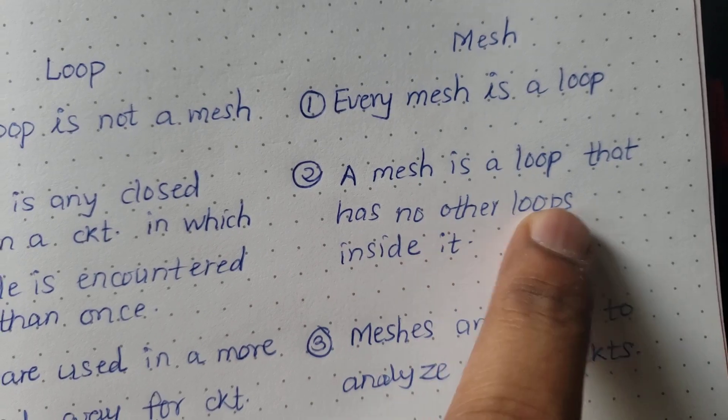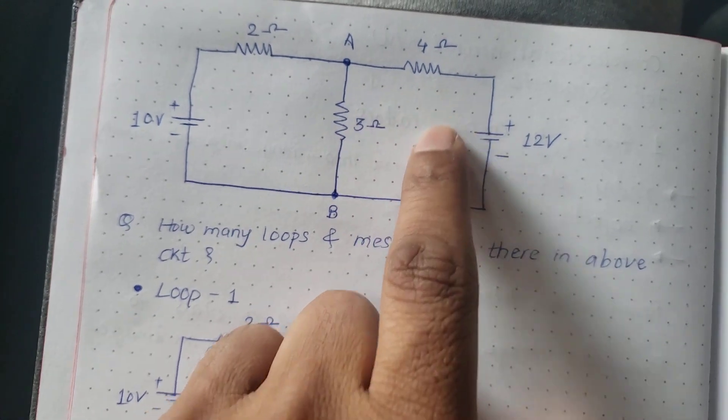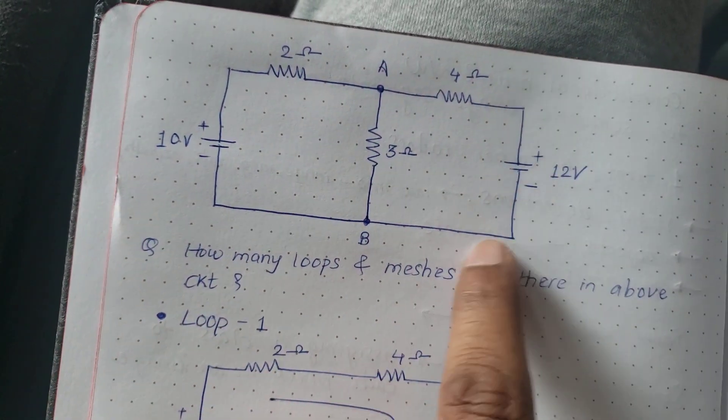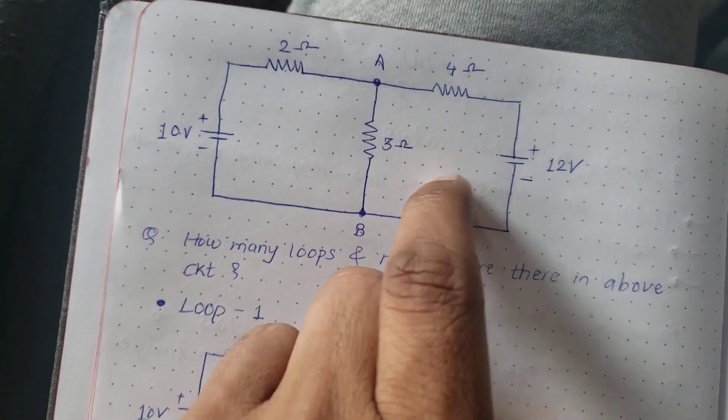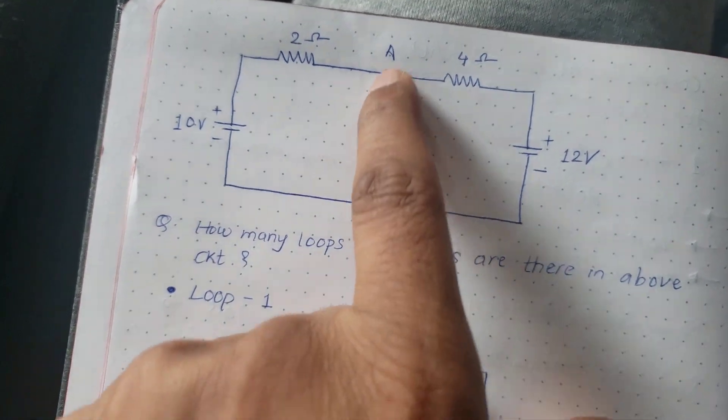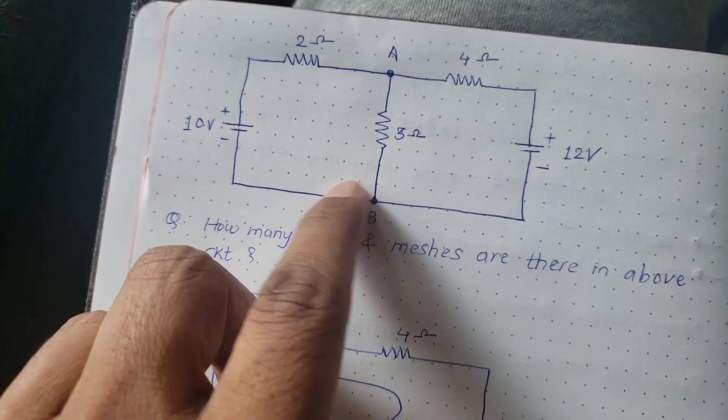Which has no other loops inside it. Do you see any other loops inside this loop? No. Like for the one that we just showed for the loop there are two loops inside it. That is not the case in case of a mesh. Mesh has no other loops inside it.